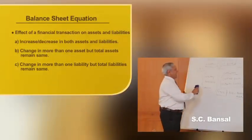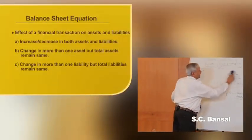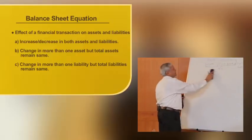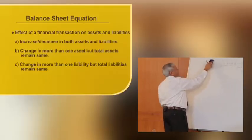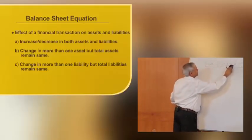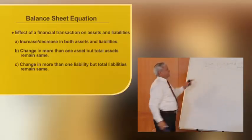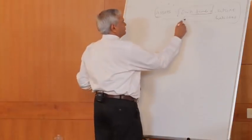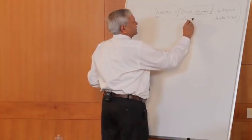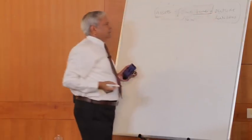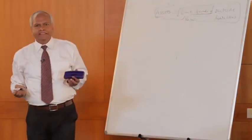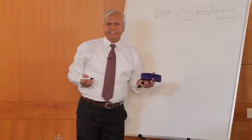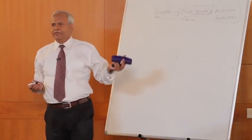Now, let us see what is the impact of any financial transaction on the assets and liabilities of the business. This is the final equation which we have arrived at, which says assets are equal to owned funds or net worth of the company, plus outside liabilities. Now let us take some examples of what is the impact of a financial transaction on the assets and liabilities of the business.